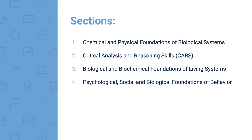The MCAT is comprised of four main sections: Chemical and Physical Foundations of Biological Systems, Critical Analysis and Reasoning Skills, Biological and Biochemical Foundations of Living Systems, and Psychological, Social, and Biological Foundations of Behavior. Within these sections you'll find a few different subjects, so we're going to walk through each one of them.